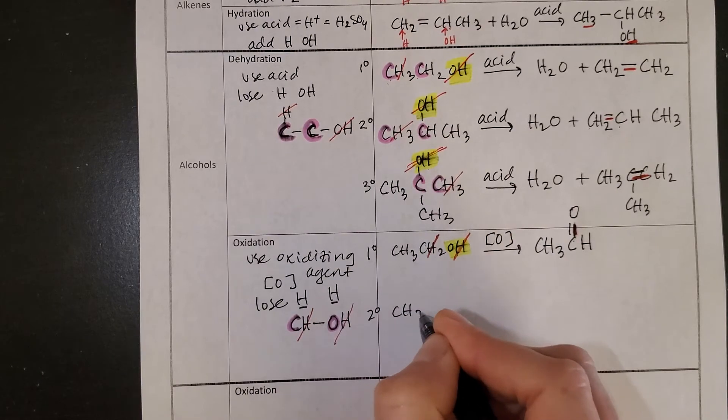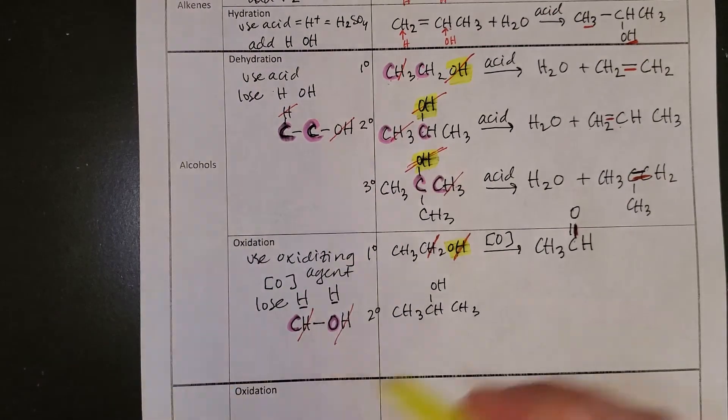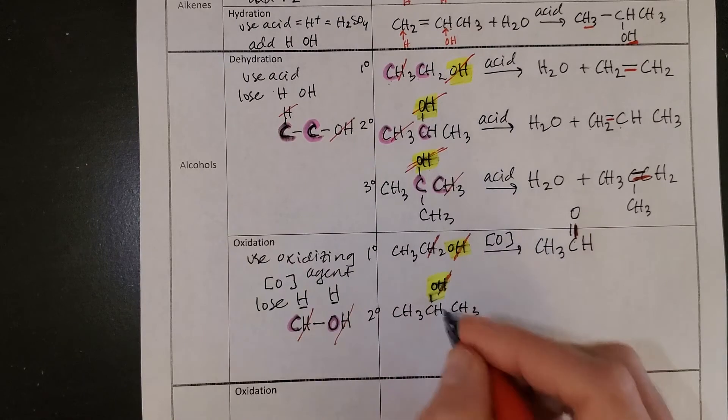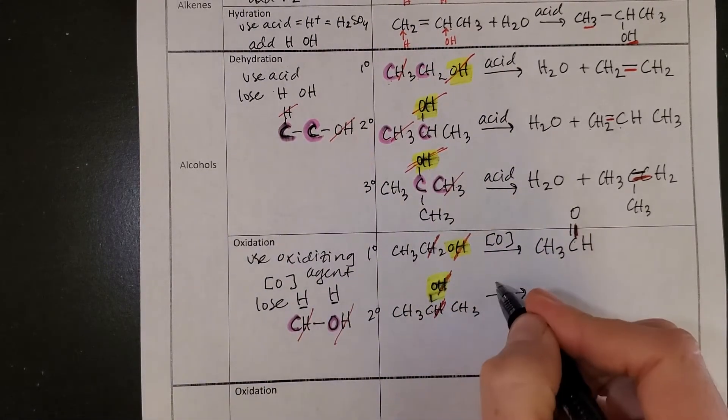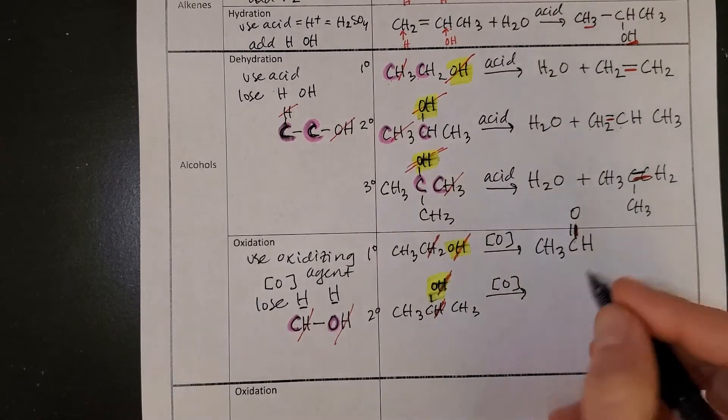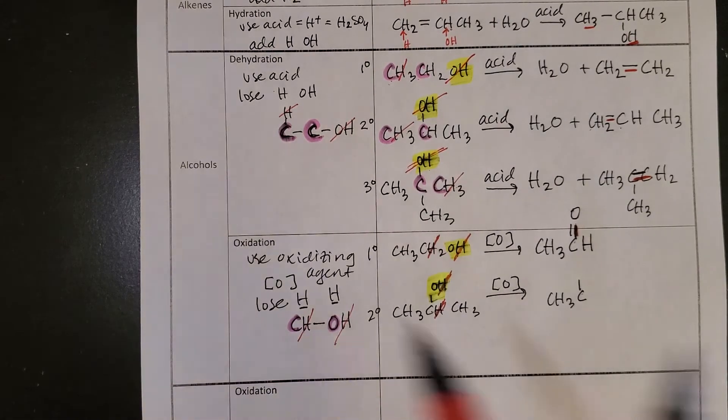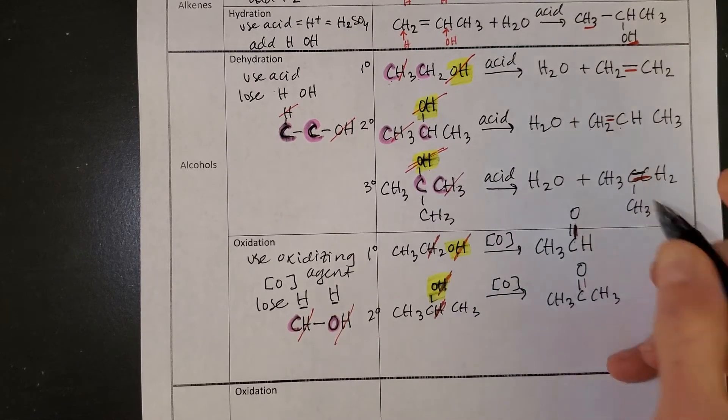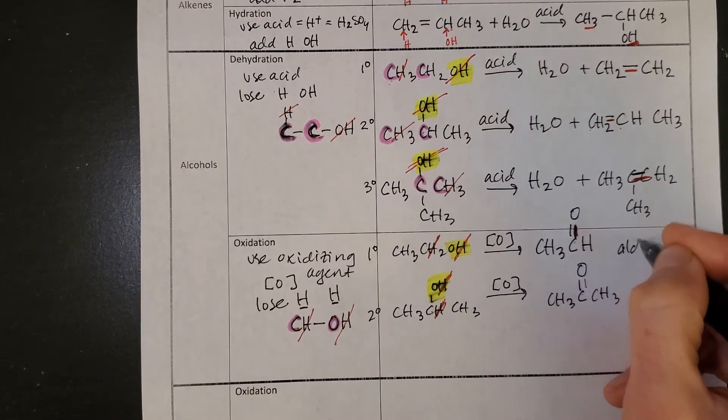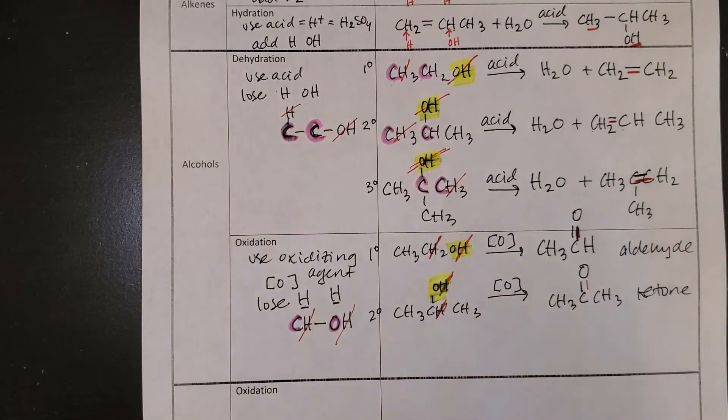Next up, CH3, CH, CH3, alcohol. So here's my alcohol. I'm going to lose a hydrogen off of the alcohol. I will lose a hydrogen off the neighboring carbon because you see an oxidizing agent. Recopy the things that didn't change, and now I have a double bond between the carbon and oxygen and a CH3. So I have an aldehyde here, and here I have a ketone when a secondary alcohol is oxidized.